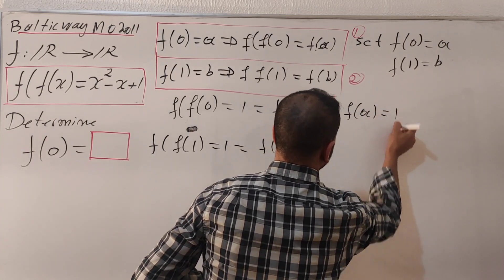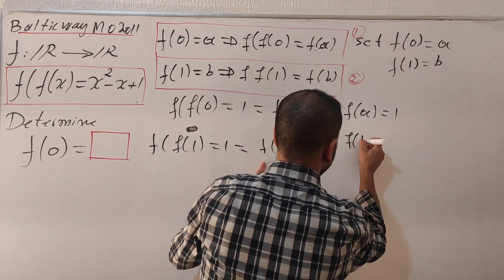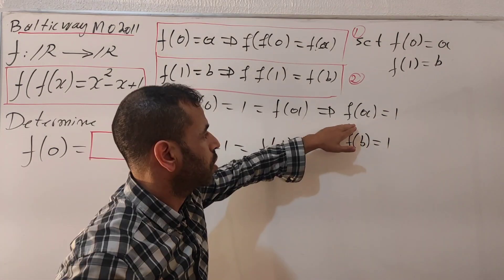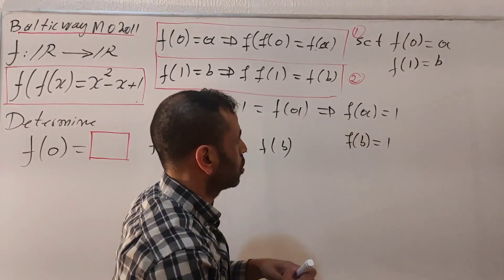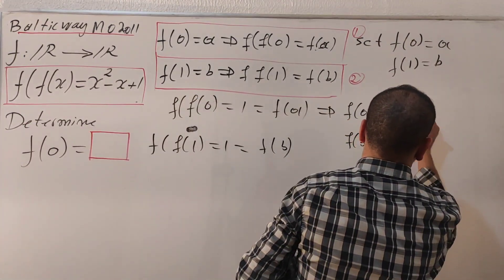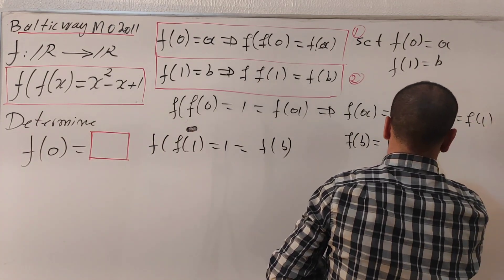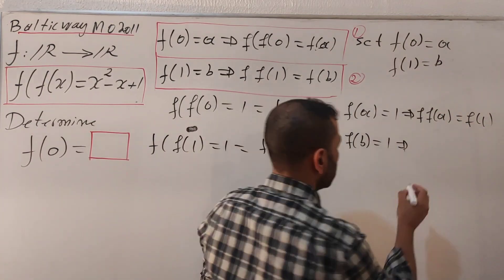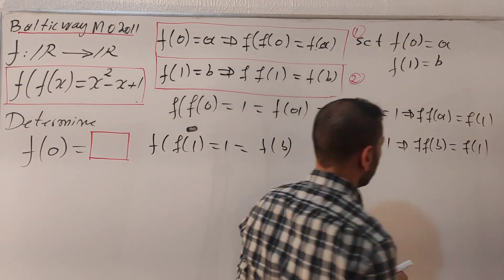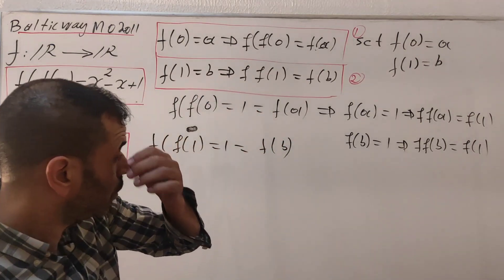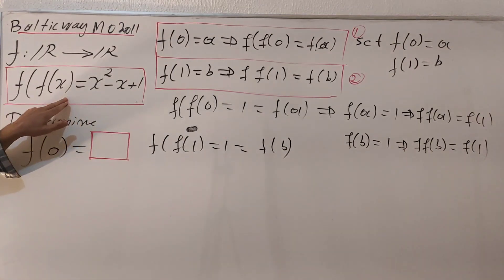Now applying f one more time: f of f of a gives us f of one, and f of f of b also equals f of one. Let's use these results to calculate f of f of a and f of f of b using the original function.